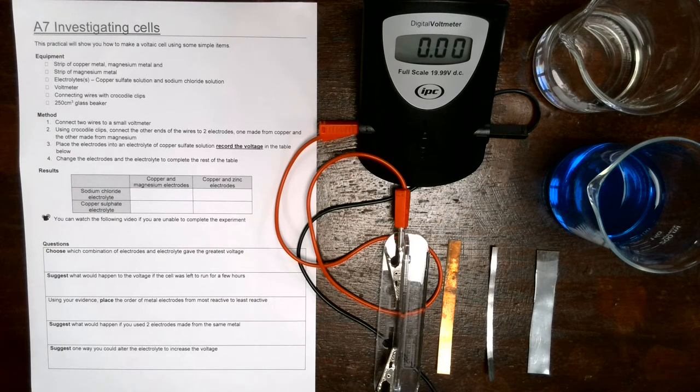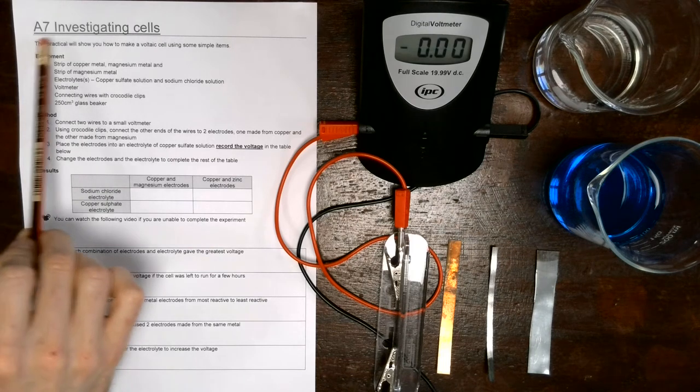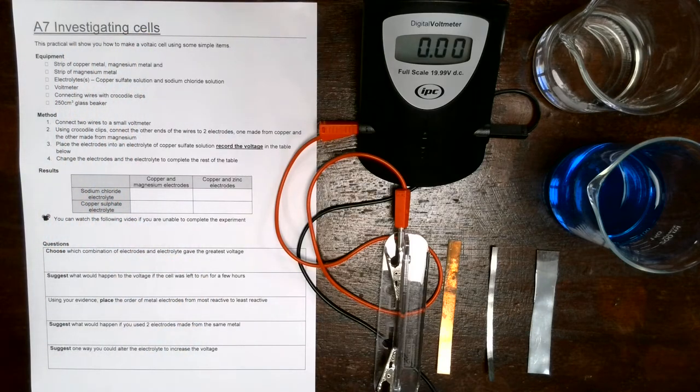So in this video we'll be on C5 topic Appendix 7, investigating cells. In this investigation we're going to be constructing four different cells using different metals and electrolytes, and we're going to be recording the voltage that is produced in each one.